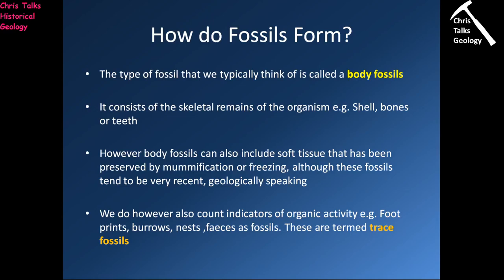The type of fossil we typically think about is called a body fossil, and it consists of the skeletal remains of an organism — the shell, the bones, or the teeth. Body fossils can also include soft tissue preserved by mummification or freezing. However, these fossils tend to be very recent geologically speaking, so they're not very old.